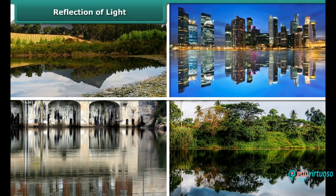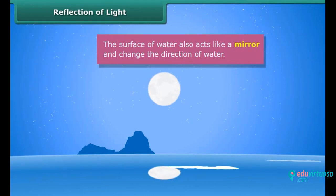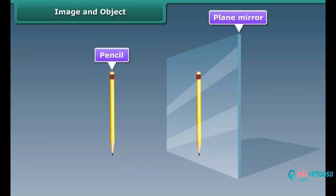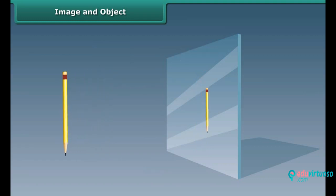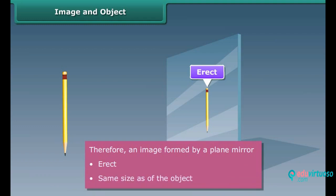Have you ever seen reflections in water? The surface of water also acts like a mirror and changes the direction of light, so we are able to see reflections in water as well. Take a plain mirror and place a pencil in front of it. The pencil which appears behind the mirror is called an image, and the pencil itself is called an object. The image will remain behind the mirror — such an image is called erect. Therefore, an image formed by a plain mirror is erect and of the same size as the object.